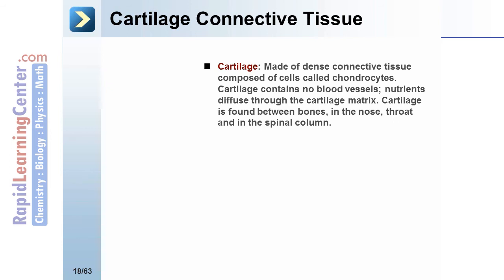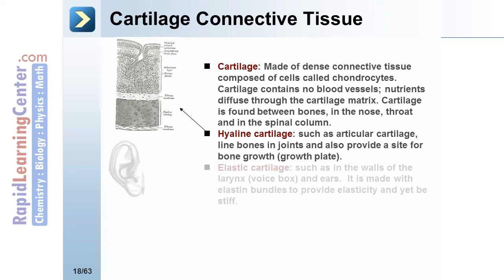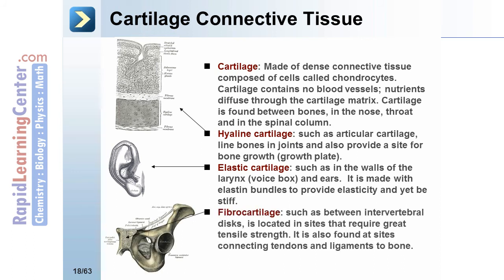Cartilage is made up of dense connective tissue composed of cells called chondrocytes. Cartilage contains no blood vessels; nutrients diffuse through the cartilage matrix. Cartilage is found between bones, in the nose, throat, and in the spinal column. Hyaline cartilage, such as articular cartilage, lines bones in joints and provides a site for bone growth at the growth plate. Elastic cartilage, such as in the walls of the larynx and ears, is made with elastin bundles to provide elasticity while remaining stiff. Fibrocartilage, such as between intervertebral discs, is located in sites requiring great tensile strength and is also found at sites connecting tendons and ligaments to bone.